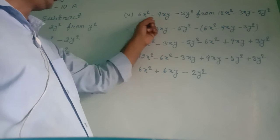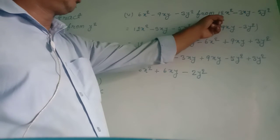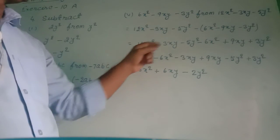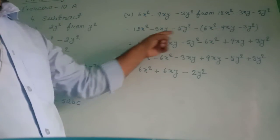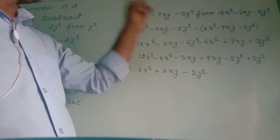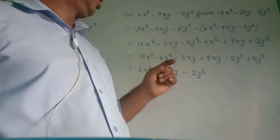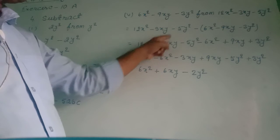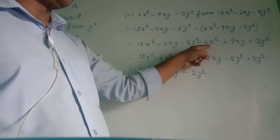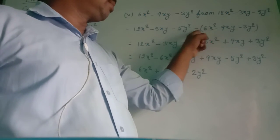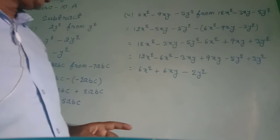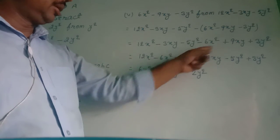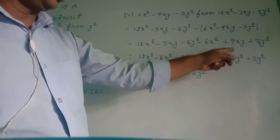Roman number 5: subtract 6x² minus 9xy minus 3y² from 12x² minus 3xy minus 5y². Writing what comes after 'from' first: (12x² minus 3xy minus 5y²) minus (6x² minus 9xy minus 3y²). All signs of the bracketed terms are multiplied by minus: minus plus minus 6x², minus minus plus 9xy, minus minus plus 3y². Grouping like terms: (12x² minus 6x²), (minus 3xy plus 9xy), (minus 5y² plus 3y²).